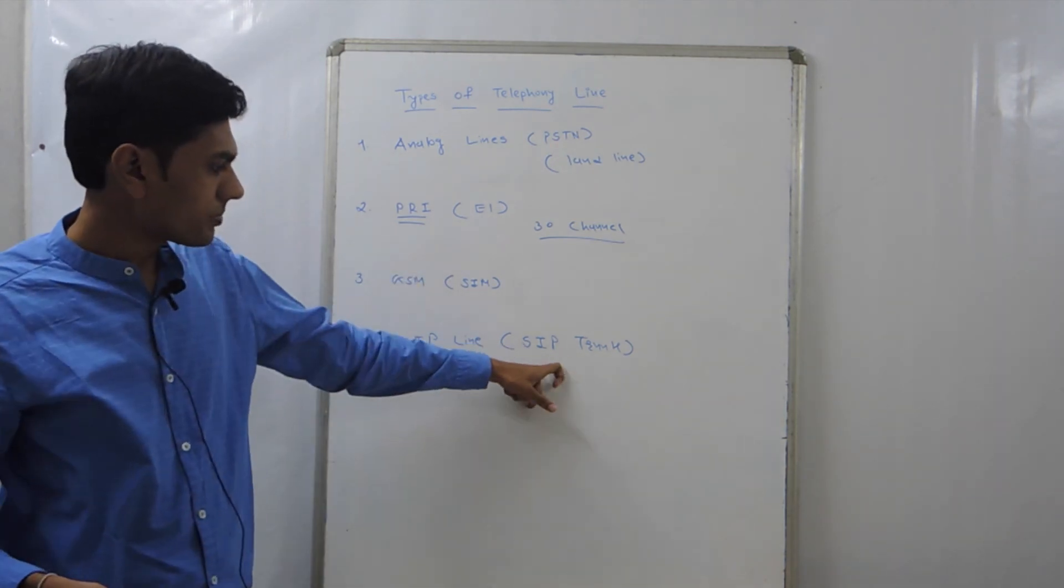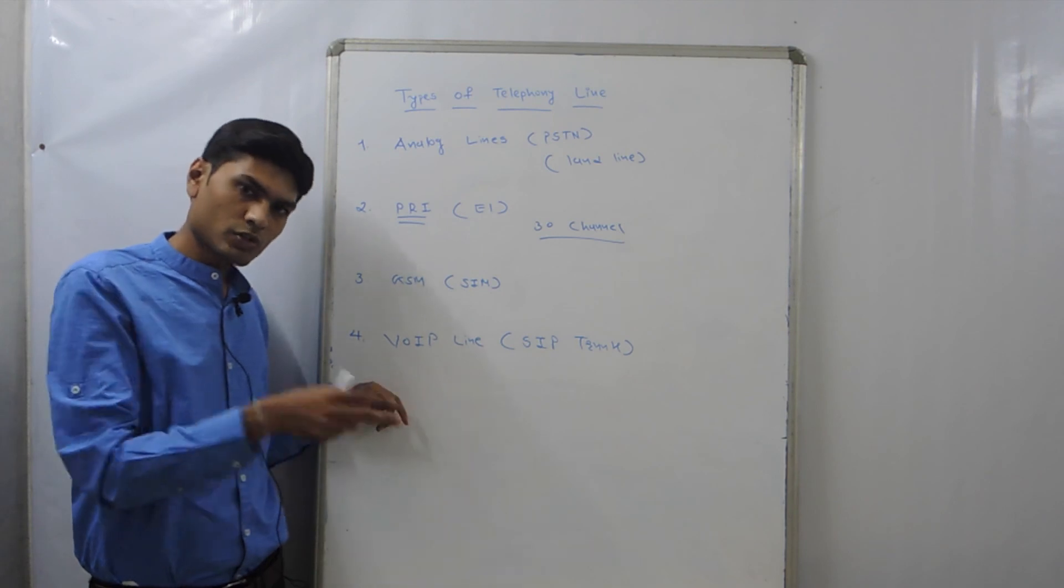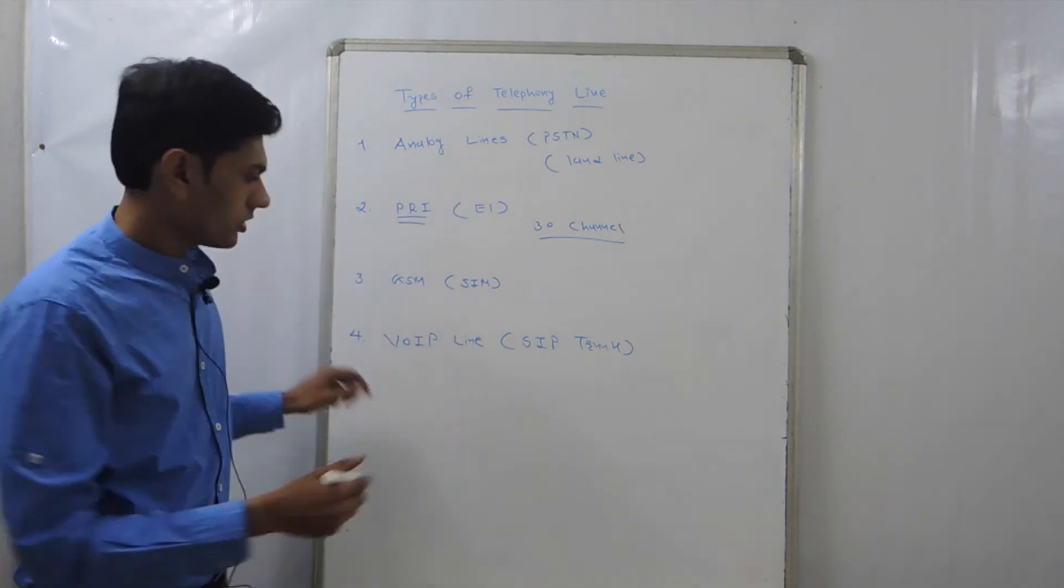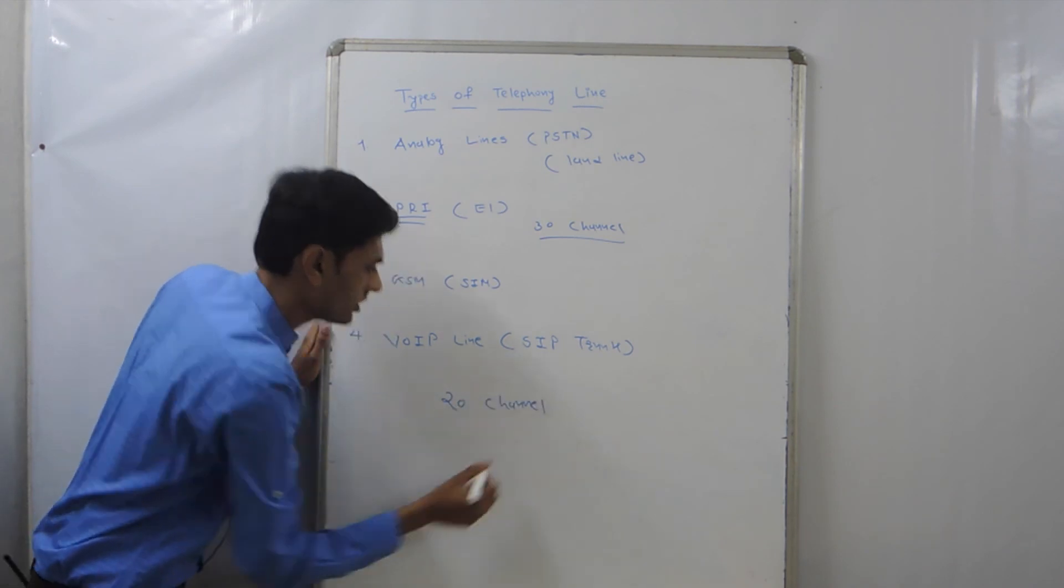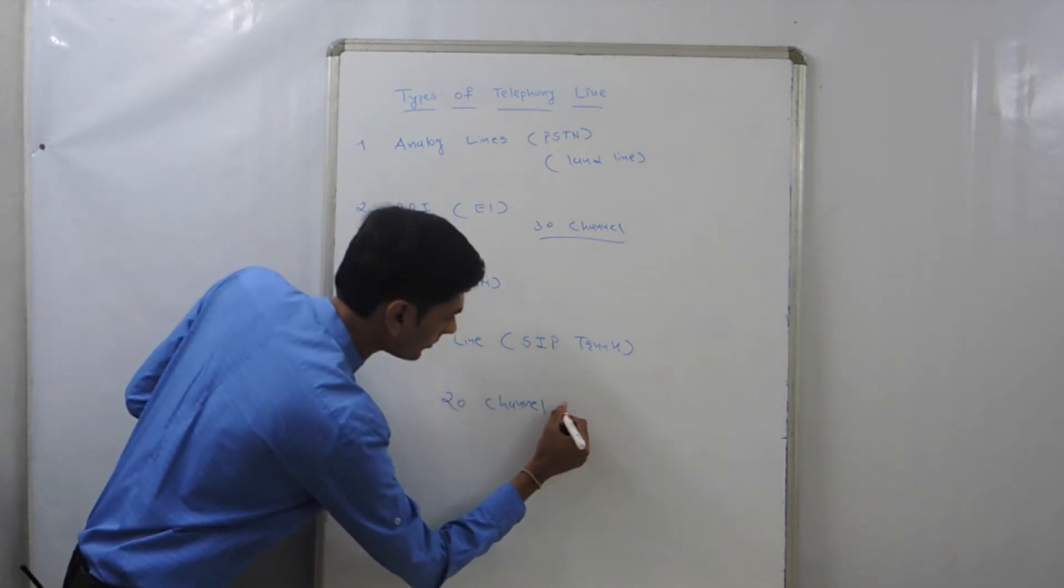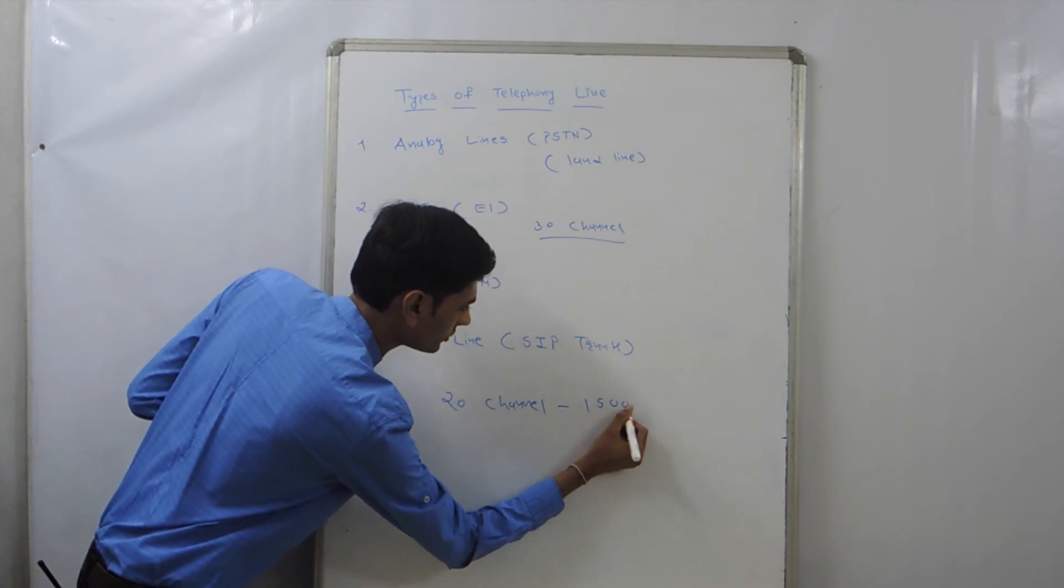And fourth one is the VoIP line or SIP trunk. So either it's VoIP line or the provider will give you the cable. It starts from 20 channels, means you can make 20 simultaneous calls, and it ends up to 1500 channels.